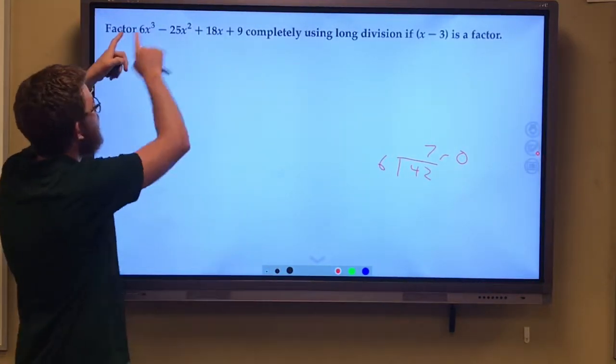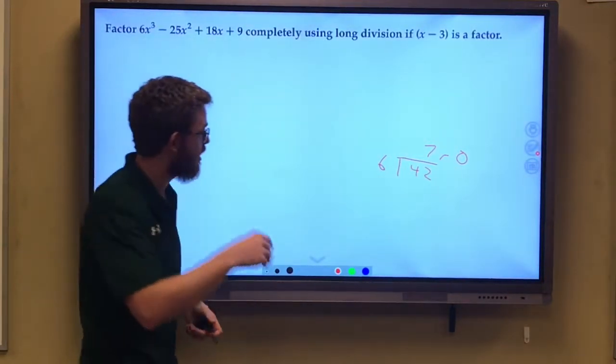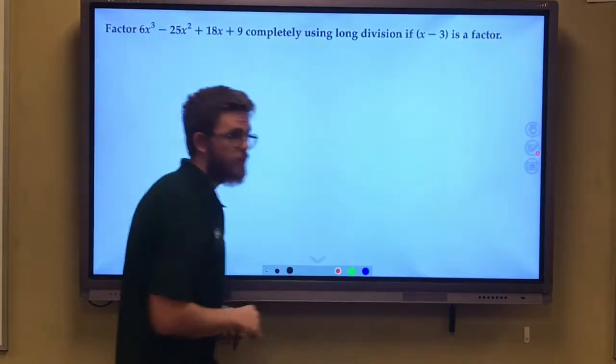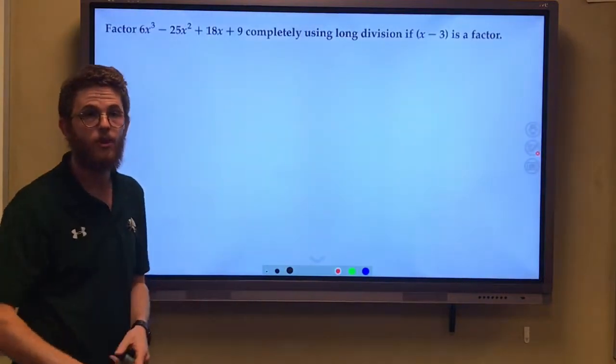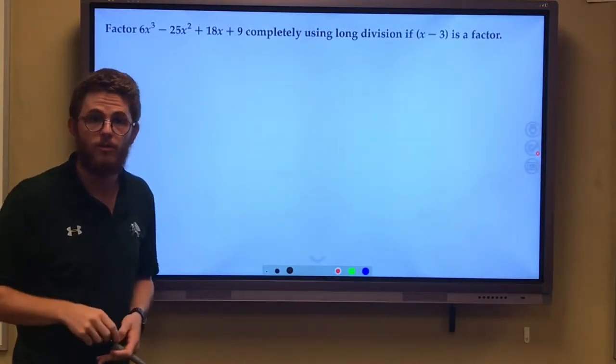Well, we're going to take our polynomial, divide it by x minus 3 first. That's our first step. If we get a remainder of 0, it is a factor, and we can factor what's left over, our depressed polynomial.